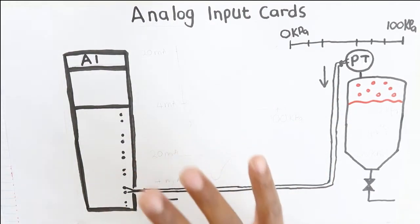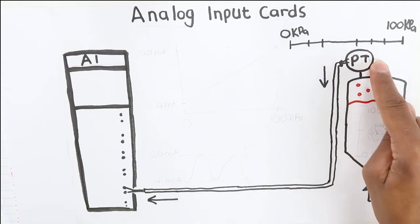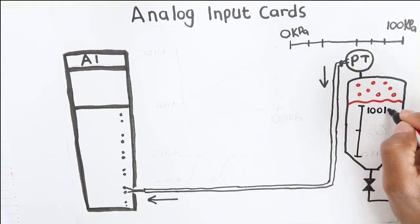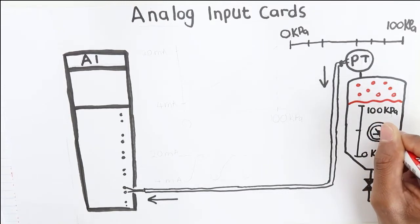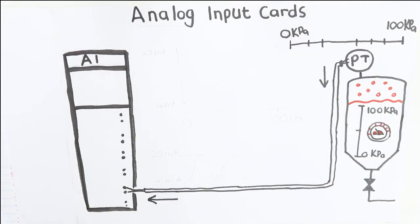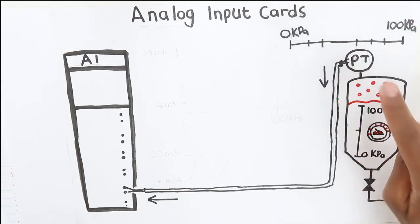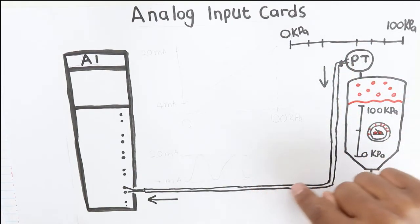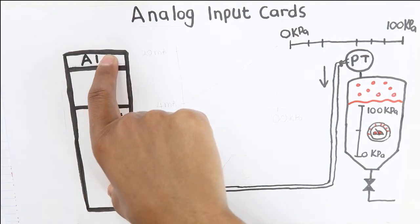Let us look at this pressure transmitter that is mounted on the tank. Let us say that the pressure in this tank can range from 0 kPa to 100 kPa. So the pressure transmitter will convert this value in pascals to an electrical signal that will be transmitted on the wire to the analog input card.